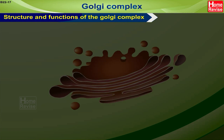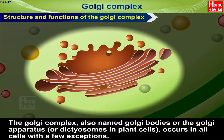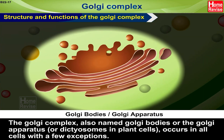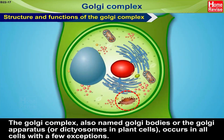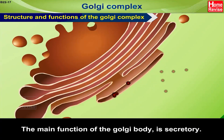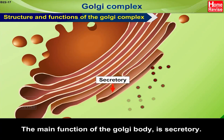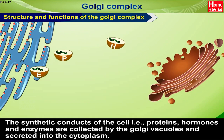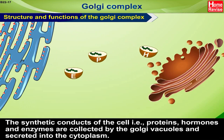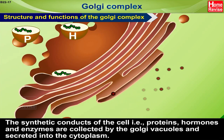Structure and Functions of the Golgi Complex. The Golgi Complex, also named Golgi Bodies or Golgi Apparatus or Dictyosomes in plant cells, occurs in all cells with a few exceptions. The main function of the Golgi body is secretory. The synthetic products of the cell — i.e., proteins, hormones and enzymes — are collected by the Golgi vacuoles and secreted into the cytoplasm.